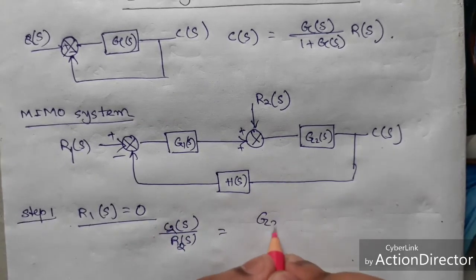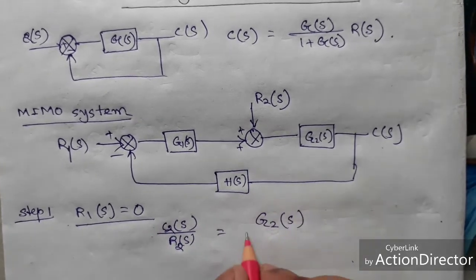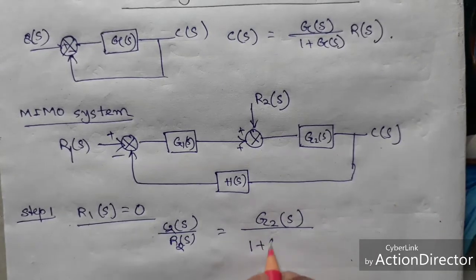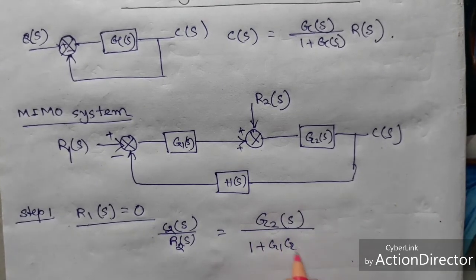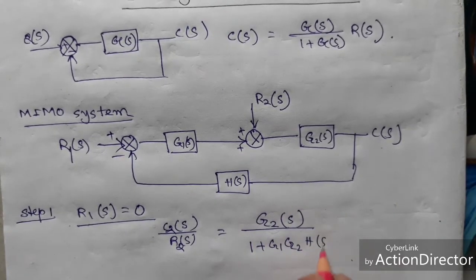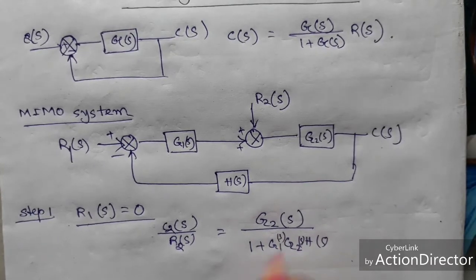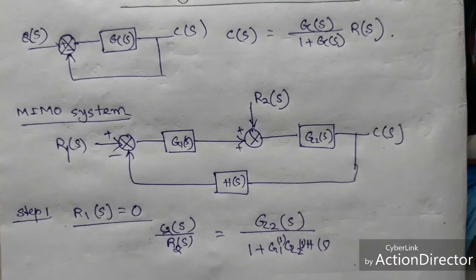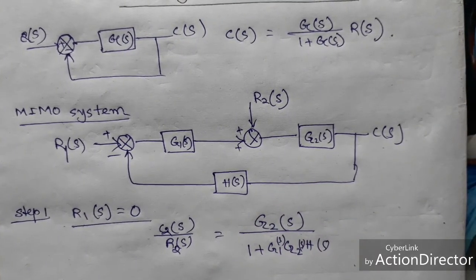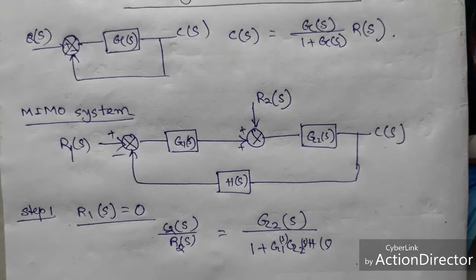So step 1, put R1(S) equal to 0, then what happen, then C2(S) by R2(S) will be what happen, this will be G2(S) divided by 1 plus G1 G2 and H(S), all are function of S. So this is the transfer function when R1 is equal to 0.